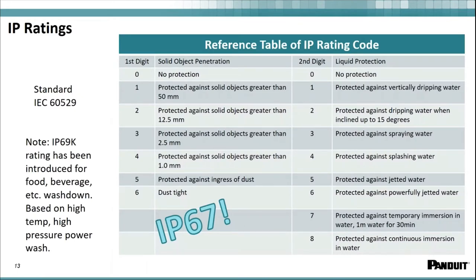IP ratings — on the plant floor you're generally going to run into three IP ratings. One is your IP20, which is your patch cord type — it'll be in cabinet, not on the machine; that would not be best practices. The most common IP rating is IP67 — dust-tight and protection against immersion in water for a meter for up to 30 minutes. It's typically carried on all your M12, M8, and 7.8 style patch cords and connectors. The other is IP69K, used heavily in food and beverage where washdown with high-temperature, high-pressure wash is required.